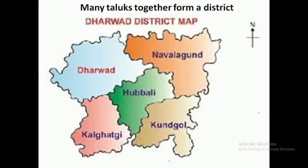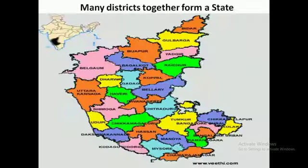Dharwad district has Nawalgund, Kundgol, Kalgatgi, Hubli, and Dharwad taluks. All five taluks make one district — Dharwad district. Many districts together make one state, and we are living in Karnataka.